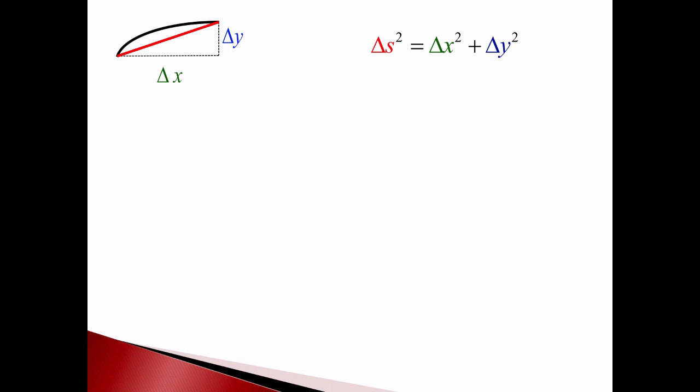delta S squared equals delta x squared plus delta y squared, right? Because we can do that from the Pythagorean theorem.